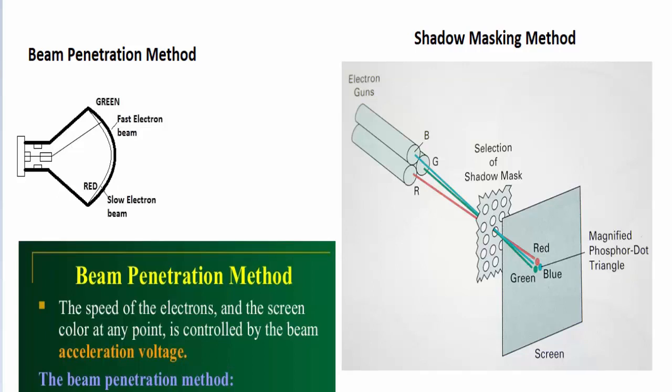Today we will be continuing computer graphics. We will be seeing colored CRT device displays, and there are two methods for it: beam penetration method and shadow masking method.